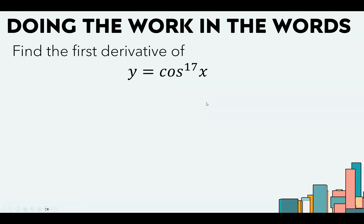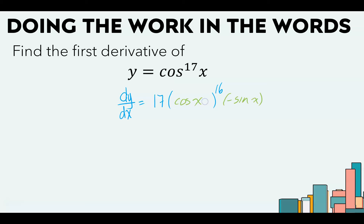Hopefully when you see cosine to the 17th power, you're thinking that's not much harder even though 17 is a bigger exponent. The derivative of something to the 17th power is 17 times that same something to the 16th power. Our something is cosine of x, which has a rate of change of negative sine of x. Don't forget to give that negative sine x a hug so it doesn't look like you're subtracting.